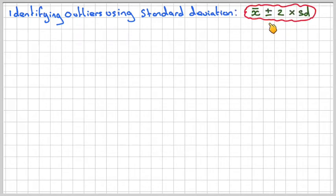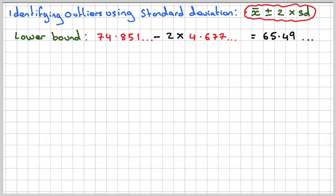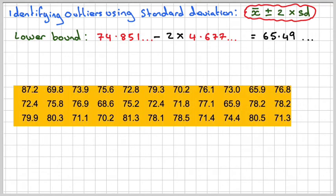To identify outliers using standard deviation, take the mean and subtract or add 2 times the standard deviation. The lower bound will be X̄, which was 74.851, minus 2 times the standard deviation, 4.677. Try not to round off. Use the original values. That gives a lower bound of 65.49. Looking at the data, none of it is below that value, so there are no outliers in the lower part.